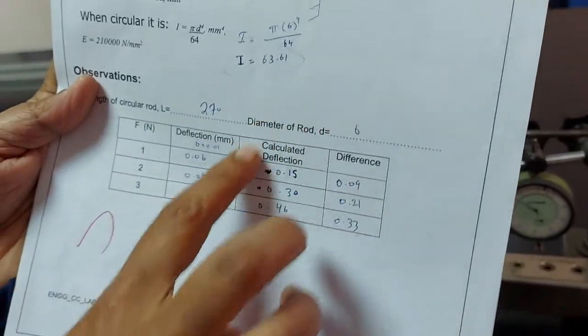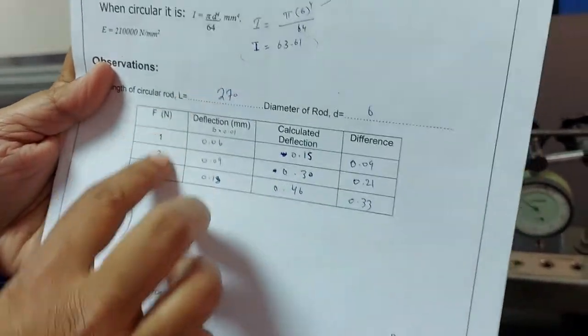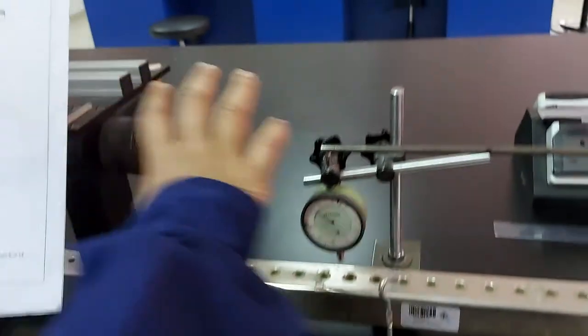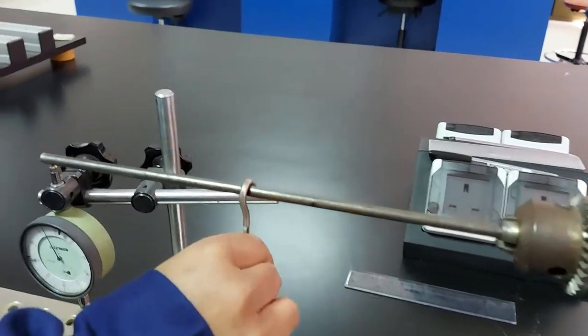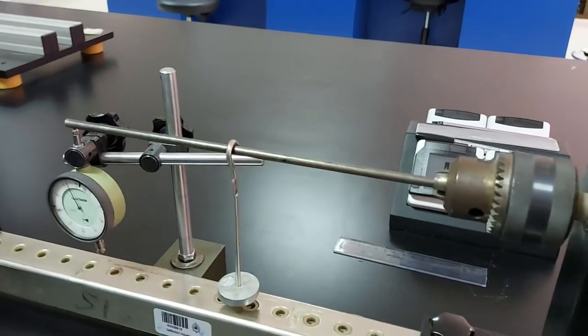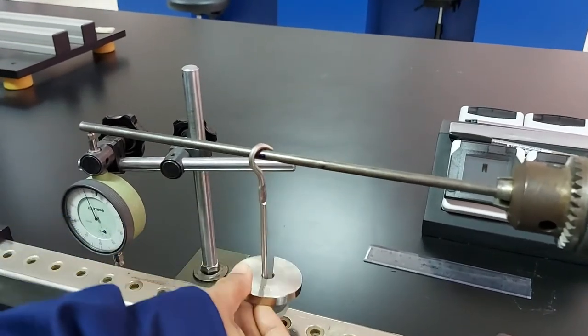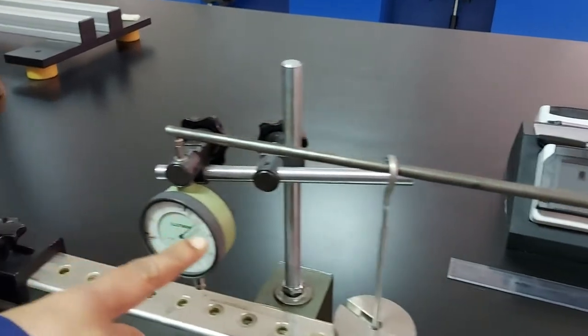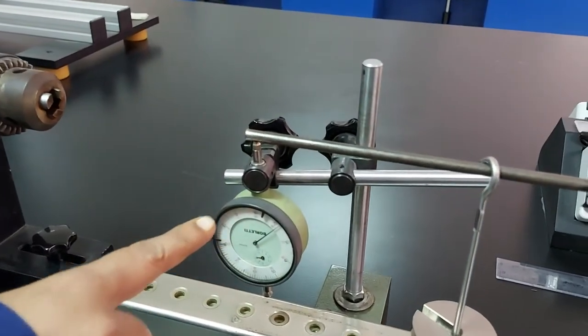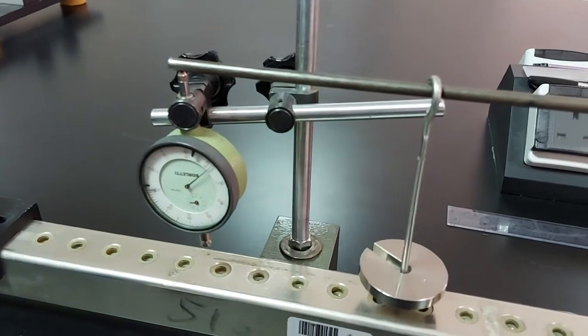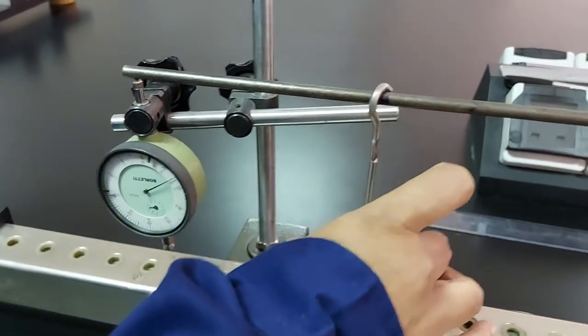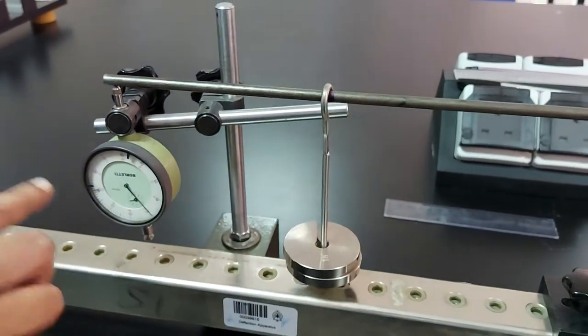This is for the calculated or theoretical deflection. And here for the practical deflection, we have already made the setup. What we have to do, we have to fix the load hanger. Initially we have to fix it to 0 and for load number 1, you need to check the deflection. And for load number 2, you have to fix that, you have to see the deflection.